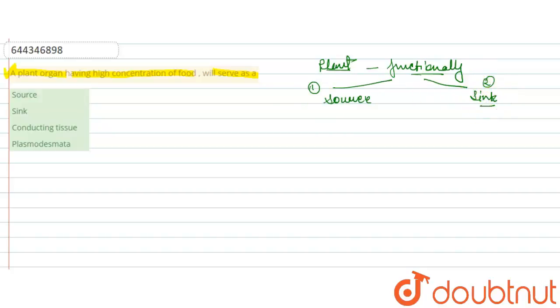In the source, we can see the net fixation of carbon, or we can say that in the source, some compounds and food material is produced.